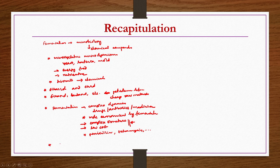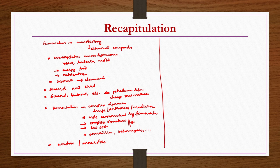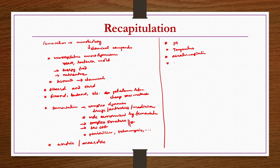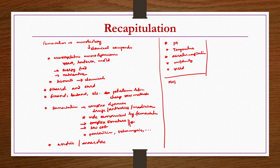Coming to the generalized details of fermentation industry, fermentation can be aerobic if it utilizes oxygen or anaerobic if it occurs in the absence of oxygen. We have also seen critical parameters affecting the fermentation process — those are pH, temperature, aeration, agitation, uniformity, and yield. These are very important factors deciding whether the fermentation process is going to be economically feasible. Then the most common engineering problems associated with almost all fermentation industries were also listed out.